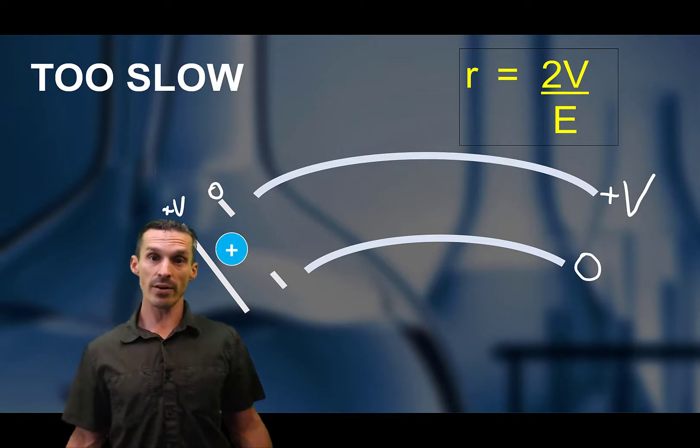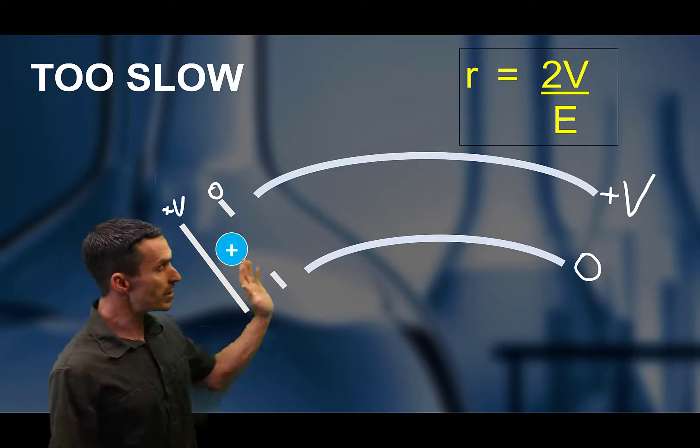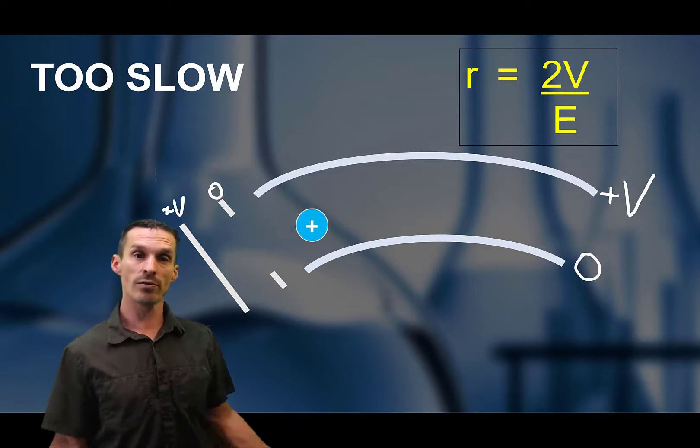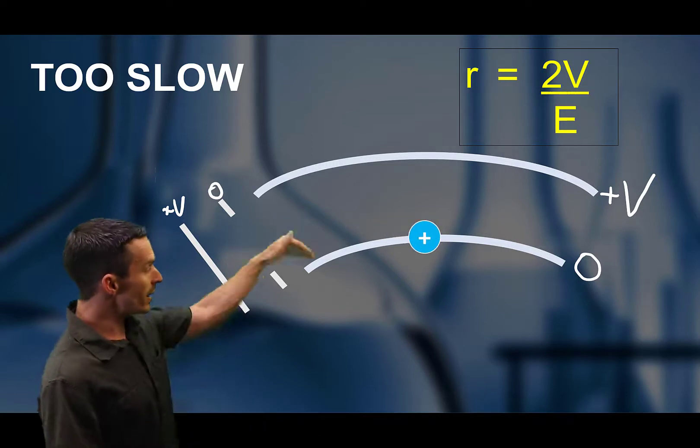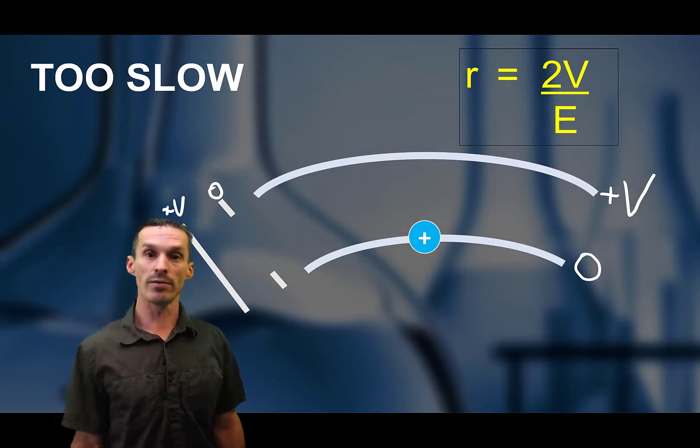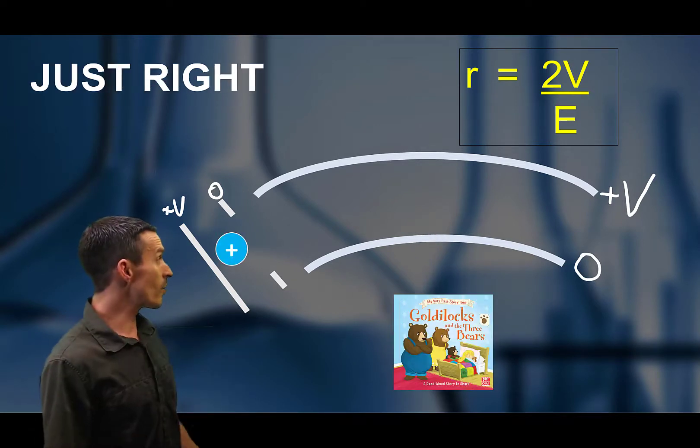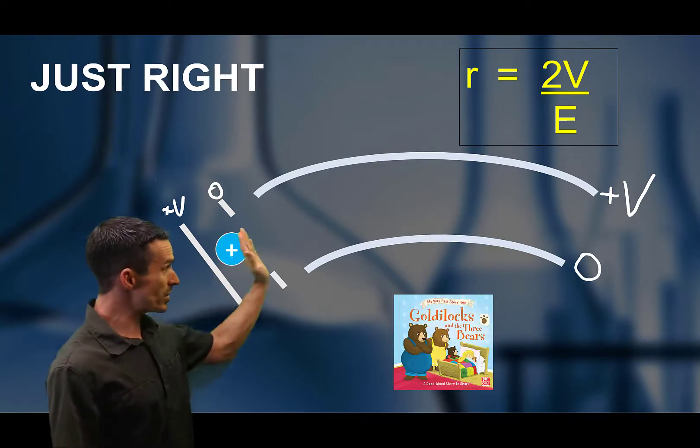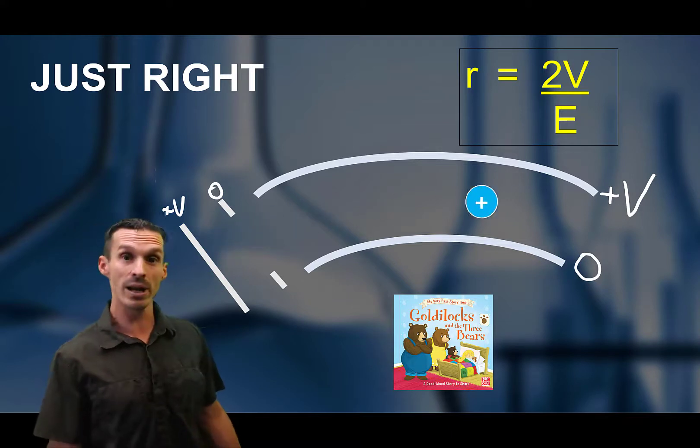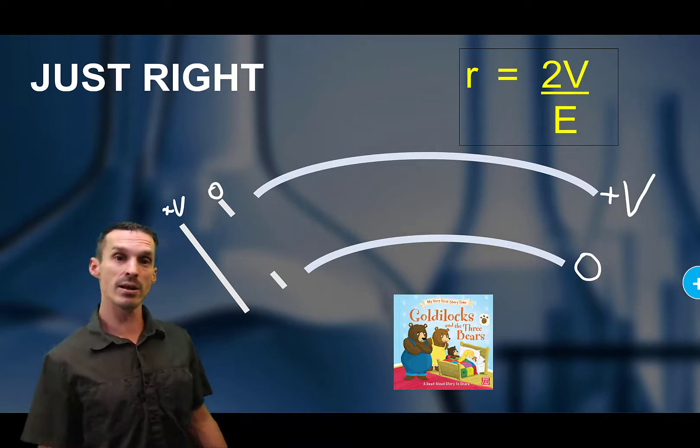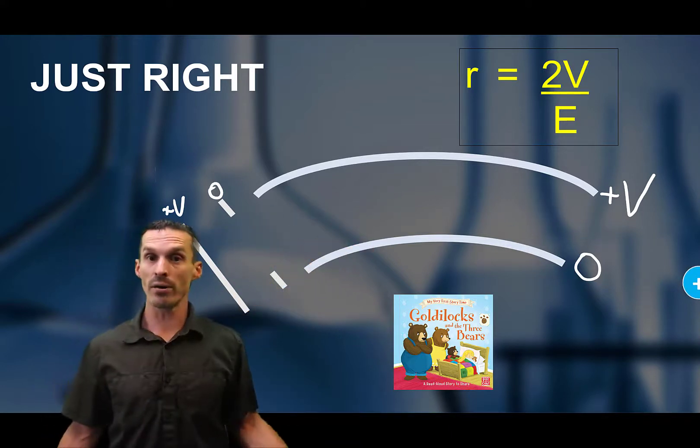Likewise, if you have an ion that's too low in energy, so if we're applying too little voltage, it'll curve too strongly. And it'll hit the bottom of the plate before it gets out of this electric sector. And of course, there's a point on the kinetic energy curve where it's going to be just right. And the ion can bend with a radius that just allows it to make it through to the other side without hitting the plates.